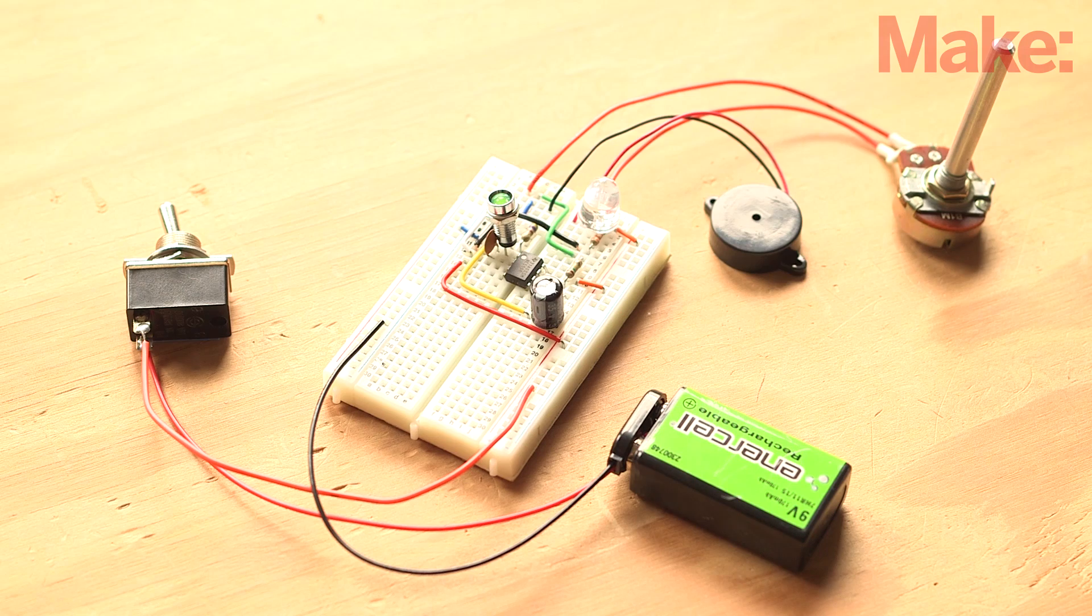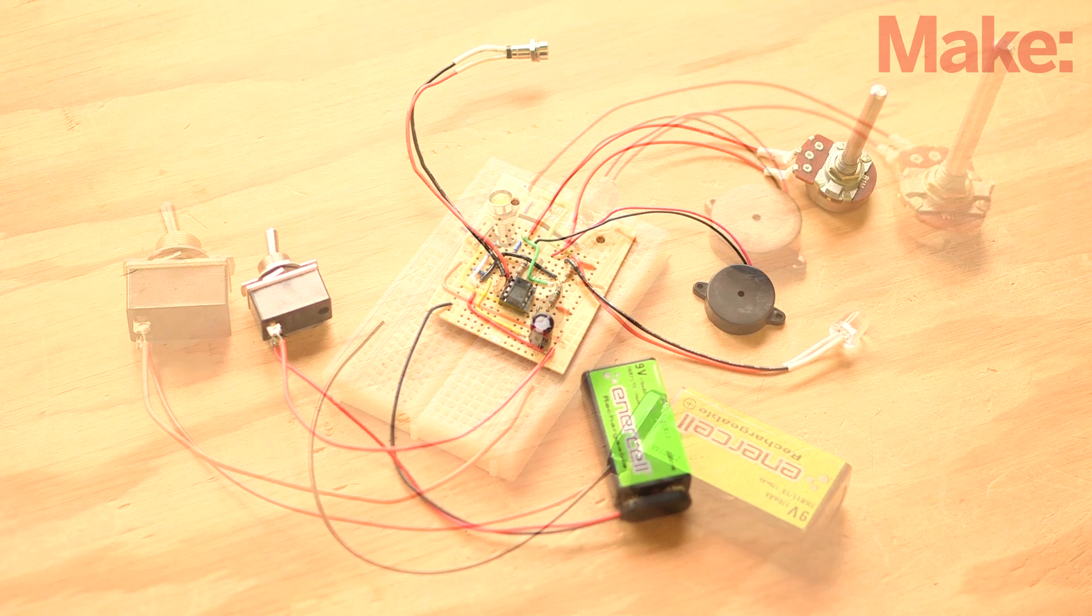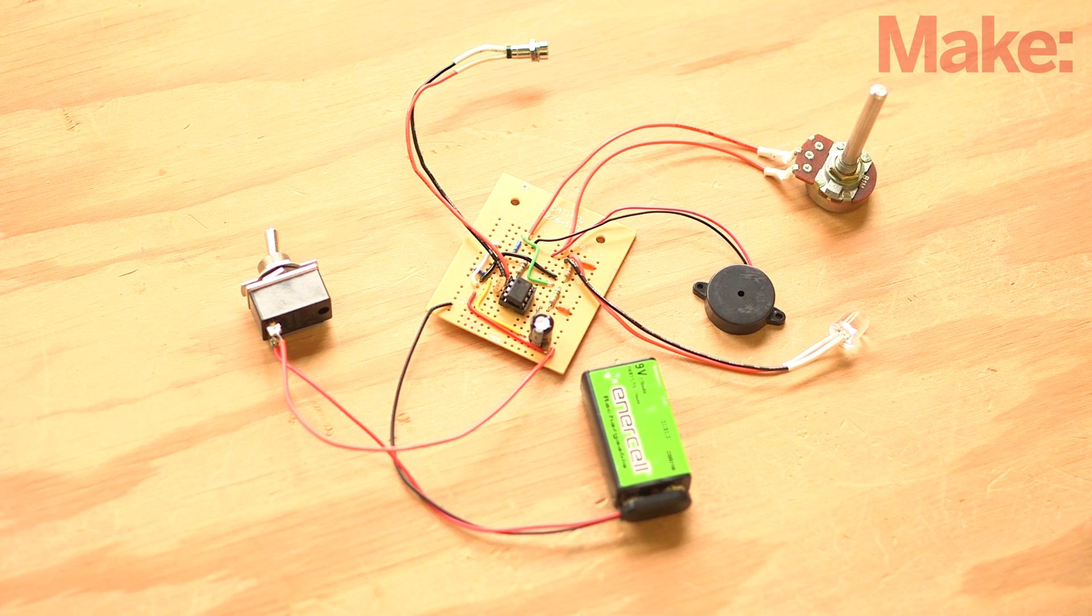If everything works, it's time to make it permanent by soldering the circuit onto perfboard. Because we're using perfboard that is identical to the breadboard, it's a fairly simple task to move everything over to the perfboard. Take your time and rebuild the circuit in the same order as on the breadboard.